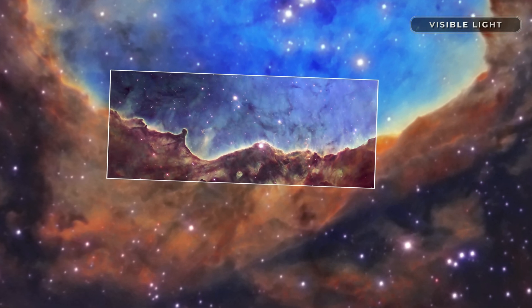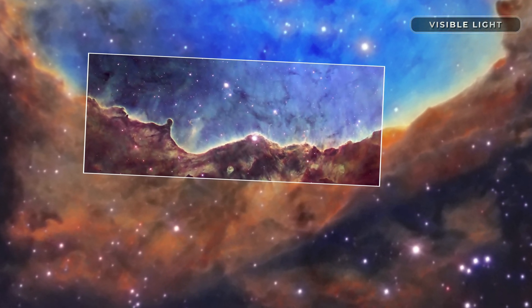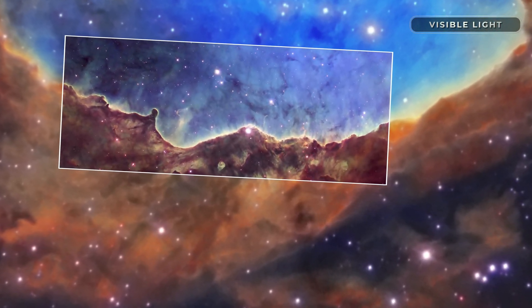These boundaries, known as ionization fronts, can resemble mountainous landscapes.